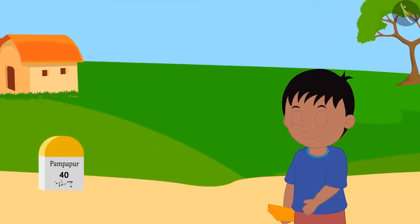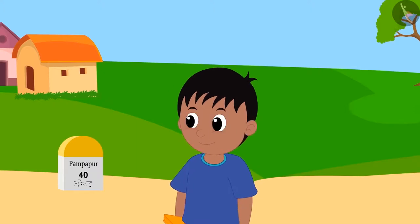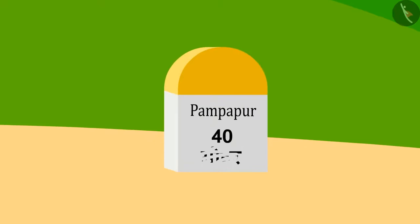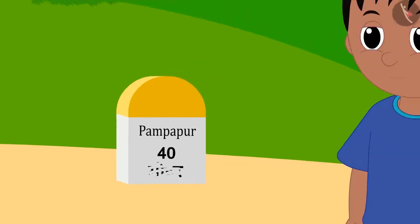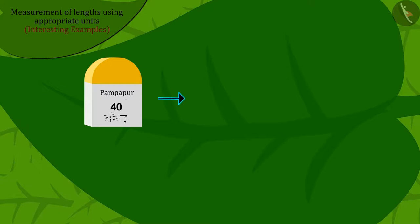Now, Raju was about to reach his house. Just then, on the way, he saw it was written on a stone plate on the ground. Pampapur 40, but the unit below was erased.